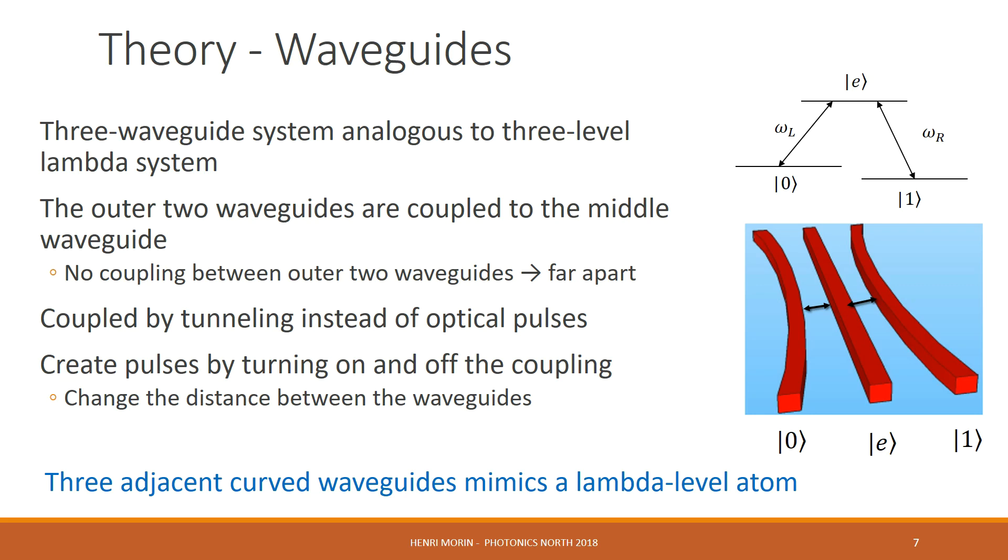We are coupled by tunneling instead of optical pulses, and in order to create the effect of pulses within the system, in order to turn on and off the coupling, we change the distance between the waveguides. Specifically, at the end of the evolution of our system, there should be no light within the middle waveguide, and we should only have light in the zero and the one waveguides. Therefore, three adjacent curved waveguides mimics a lambda-level atom.